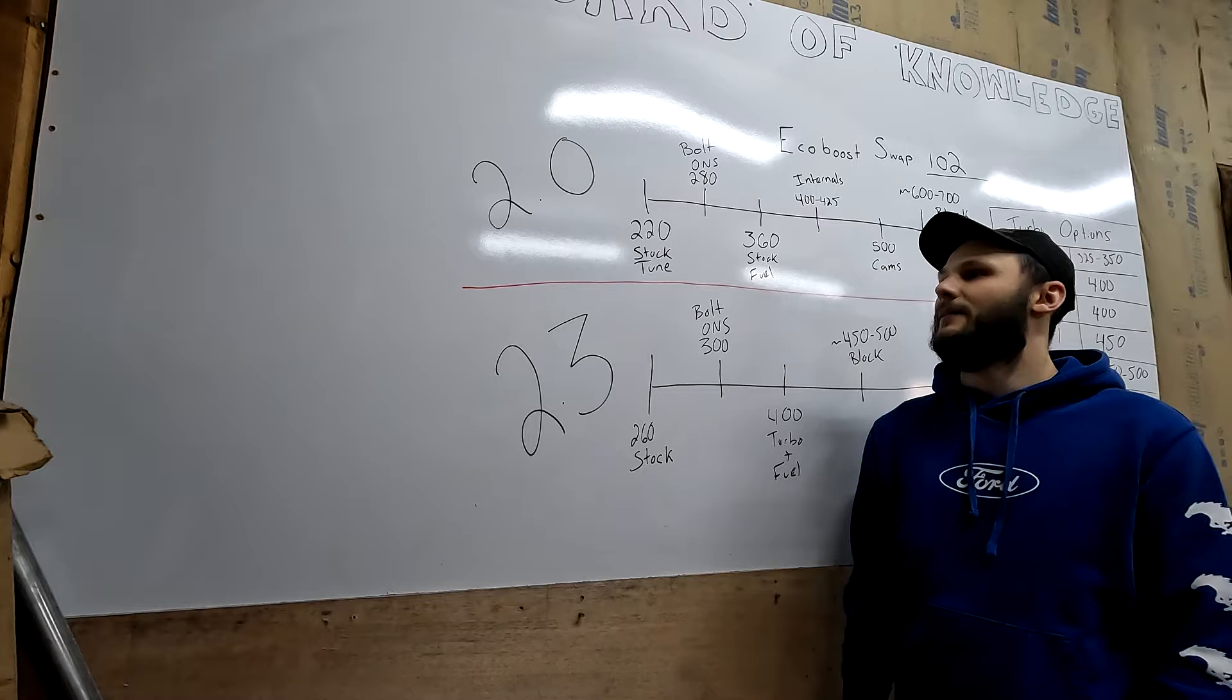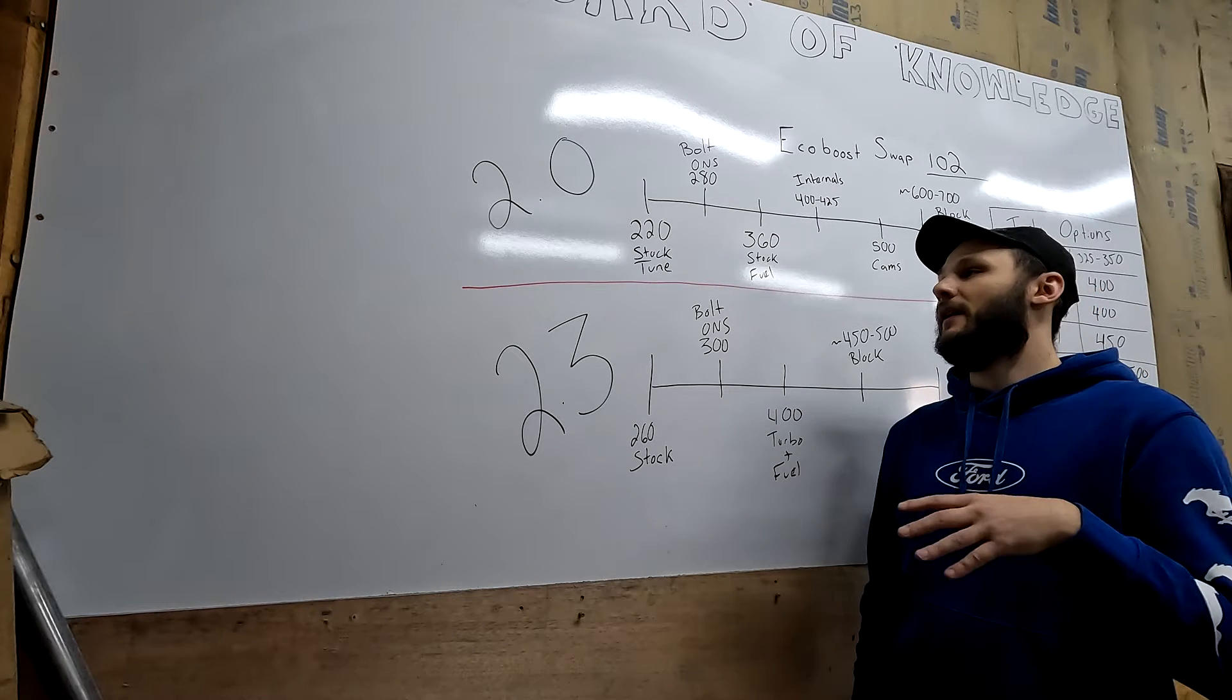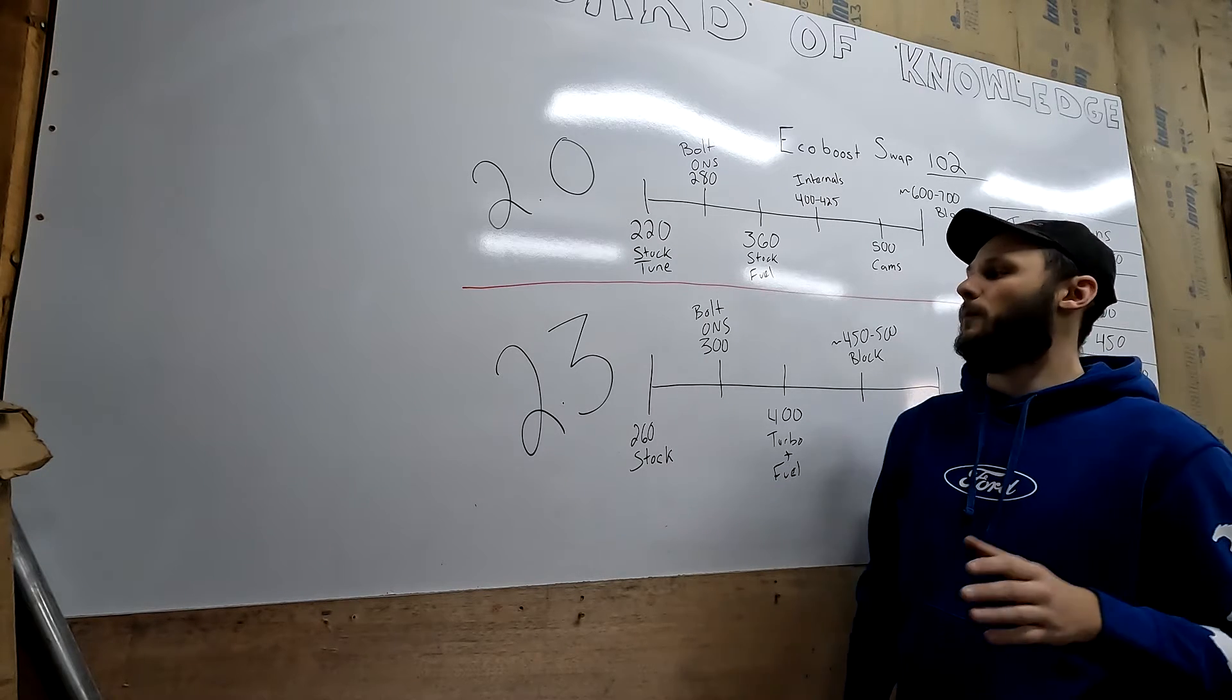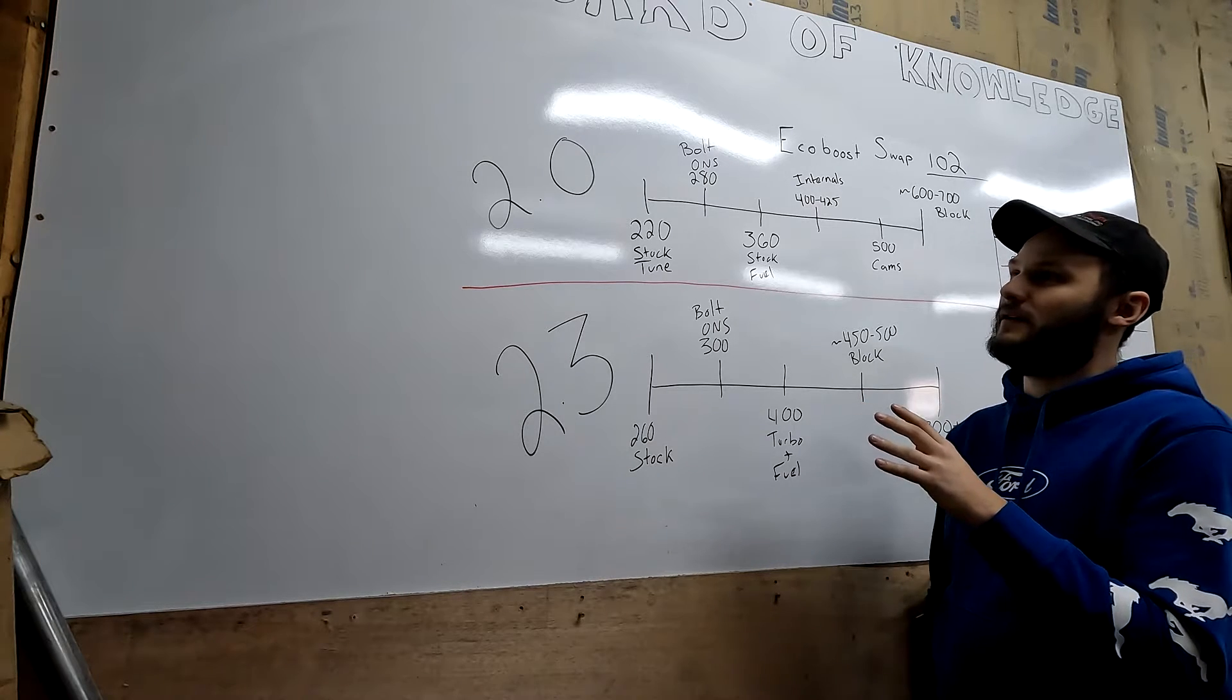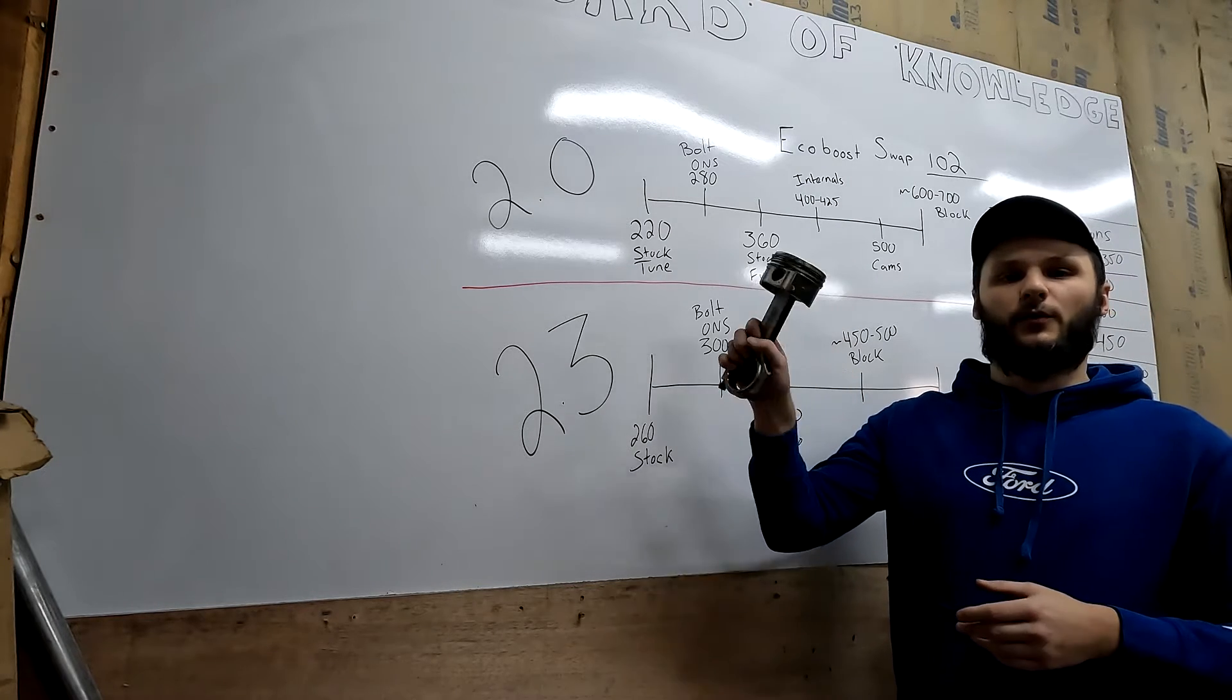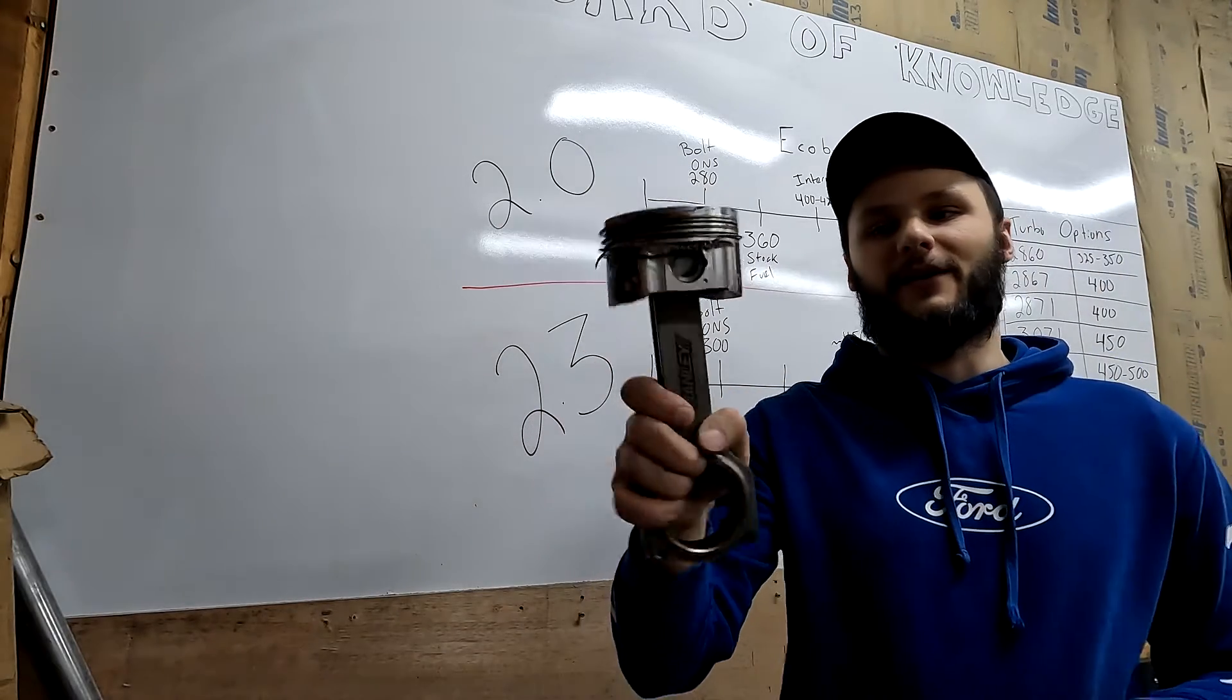What's up guys, we are back. Today I'm going to be talking about how to mod your EcoBoost four-cylinder, specifically the 2.0 and the 2.3, because those are the ones I know the most about. We have laid out here a graph of the stock limits of everything and what to do to get past those limits. I also got a new pointing device. I'll show you what this is from after the video, as you can see it's pretty torn up, but back to it.